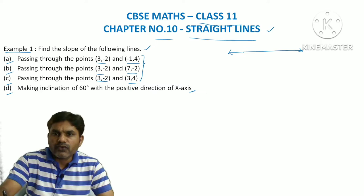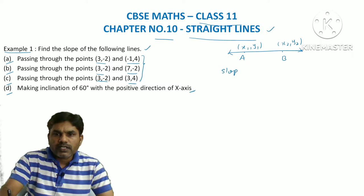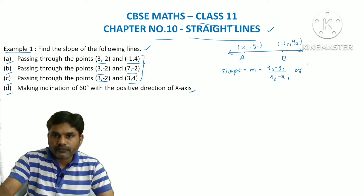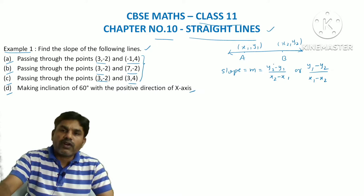If you take any line and it has two points — let's name them A and B — where the coordinates of the first point are (x1, y1) and the coordinates of the second point are (x2, y2), then slope, represented by the letter m, is equal to (y2 - y1) / (x2 - x1), or equivalently (y1 - y2) / (x1 - x2). This is simply the difference of y-coordinates divided by the difference of x-coordinates of the two given points.